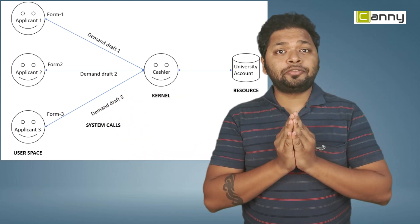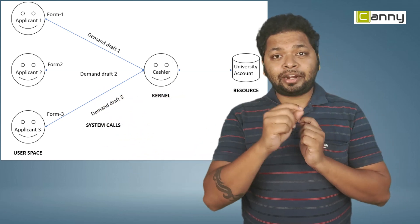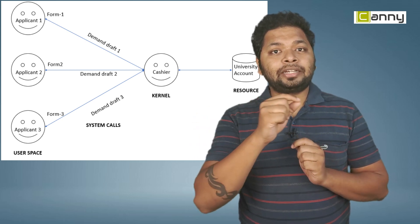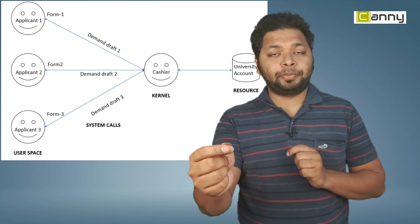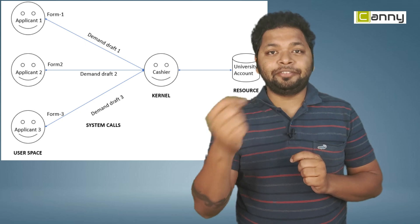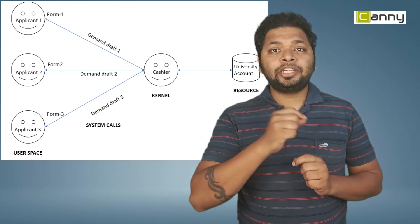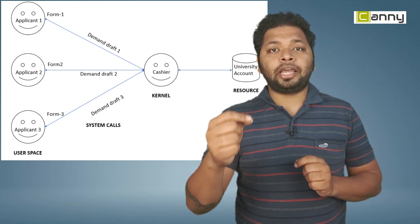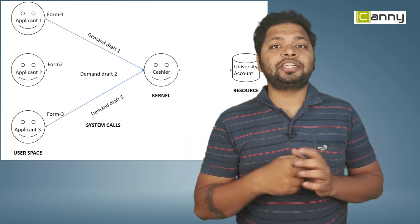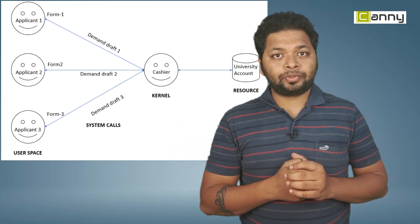Now the demand draft that you are going to give to the cashier, that demand draft is a system call that goes from user space to kernel space to perform a certain activity. So here, the activity is you are giving this demand draft for the amount to be deposited in the university's account.